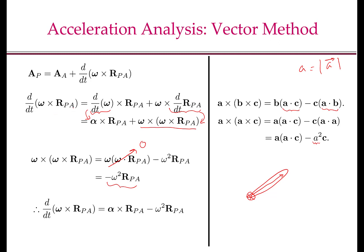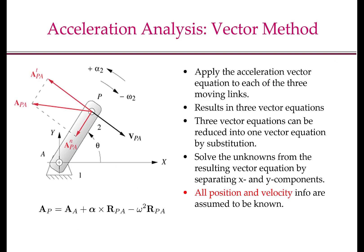Therefore, d/dt of (omega cross RPA) becomes alpha cross RPA minus omega-squared times RPA, and the full acceleration equation is: AP equals AA plus alpha cross RPA minus omega-squared times RPA. This acceleration equation is all we need for acceleration analysis of the four-bar linkage. We apply it to each of the three moving links to get three vector equations, simplify by substitution into one vector equation, then extract two scalar equations to solve for the two unknowns. All position and velocity information is assumed known.